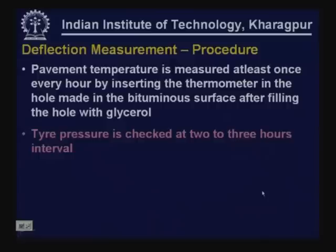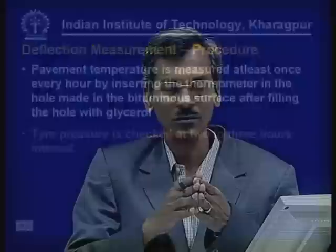During the deflection survey, pavement temperature must be measured at least once every hour by inserting a thermometer in a hole made in the bituminous surface filled with glycerol. Tire pressure is checked at two to three hour intervals, and if it deviates from 5.6 kg/cm², it must be adjusted.